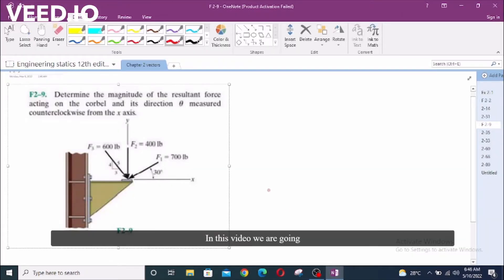In this video we are going to solve fundamental problem 2-9. The problem says determine the magnitude of the resultant force acting on the corbel and its direction theta measured counterclockwise from the x-axis. To solve this problem, first of all we have to find the components of these forces.